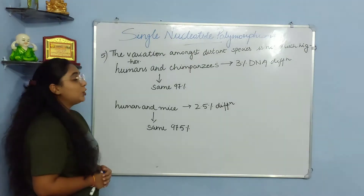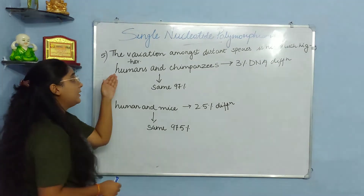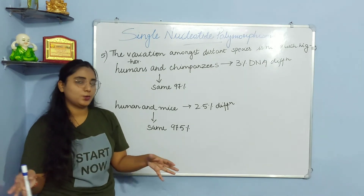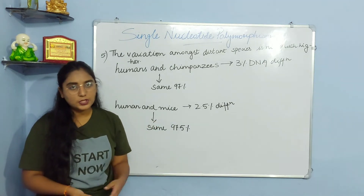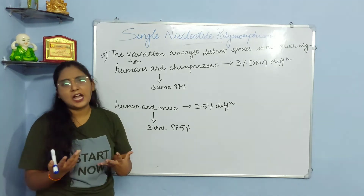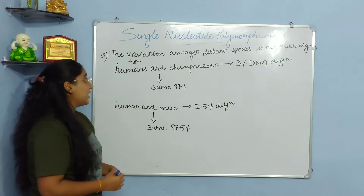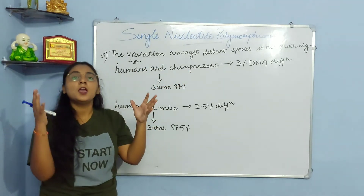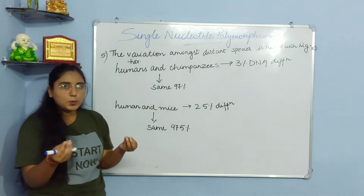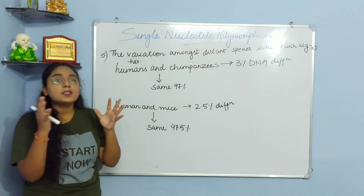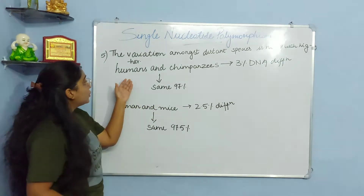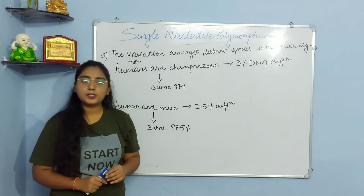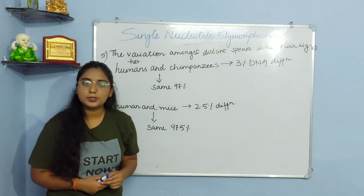The last point: the variation amongst distant species is not much higher — bhale hi bahut different species ho, bahut door ka koi relation bhi na ho, still jo variation hai woh bahut zyada nahi hai amongst the population. For example, humans and chimpanzees — jinhe hum kaafi close family mein relate karte hain — humans, chimpanzees, monkeys, inko hum kaafi past ki family mein relate karte hain. To in mein jo hai, woh 3% DNA ka difference hai aur jo same hai woh 97% conserved elements hain in dono hi species mein.